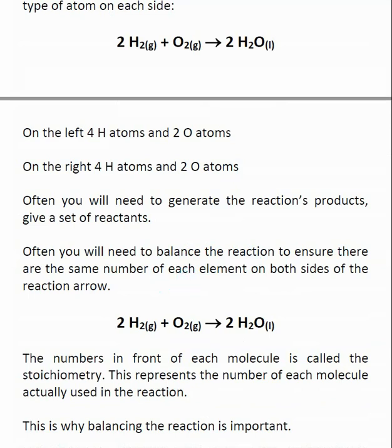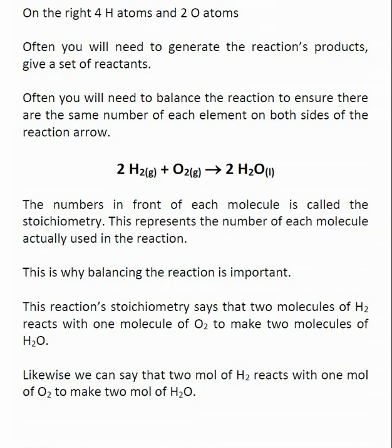One of the other things that's important and part of the reason why it's vital for you to balance a reaction is that the number that is out in front of each molecule involved in our chemical equation is very important. So this is called stoichiometry, and it tells me exactly how many of each molecule is involved in the reaction.